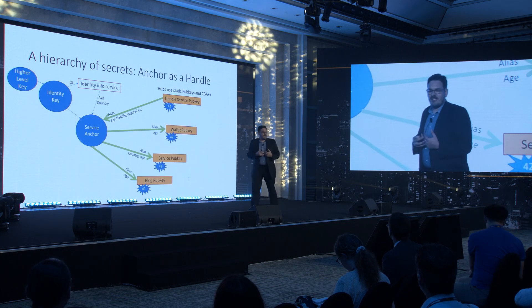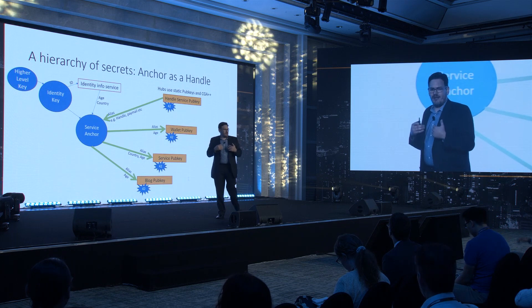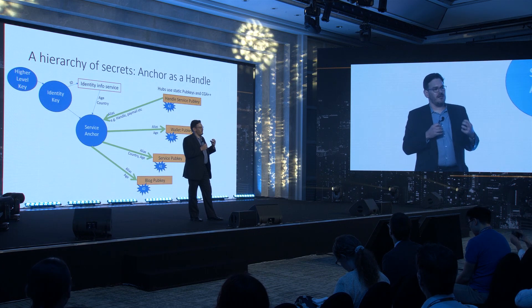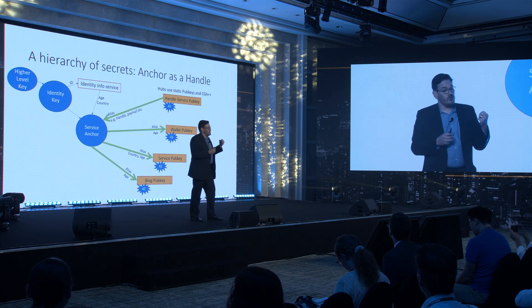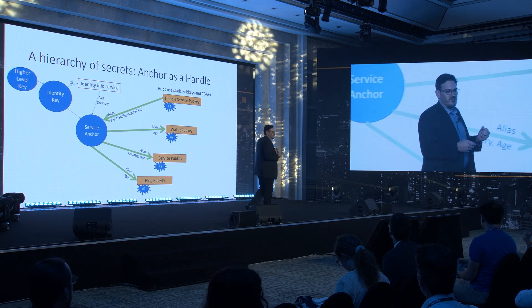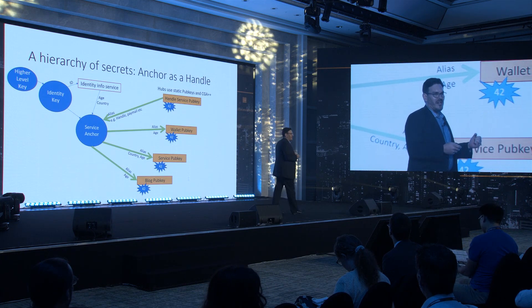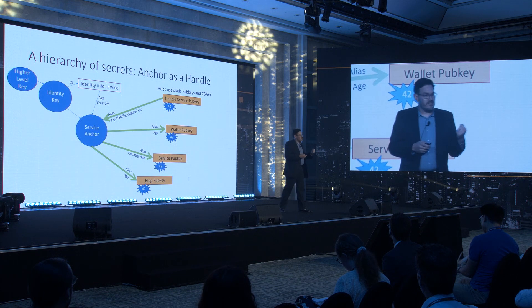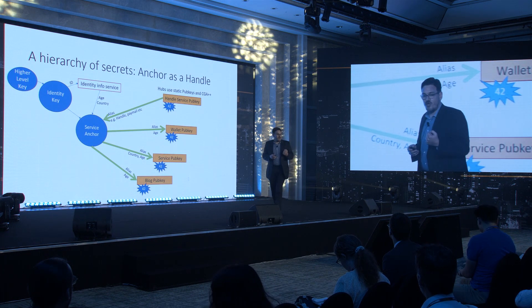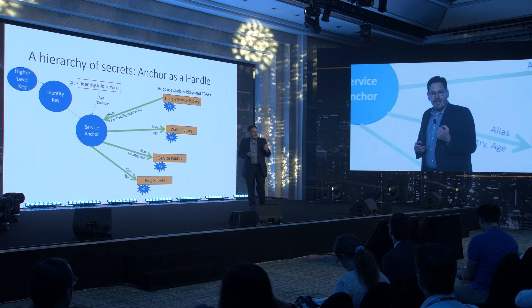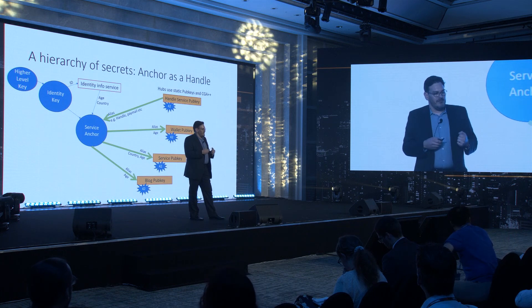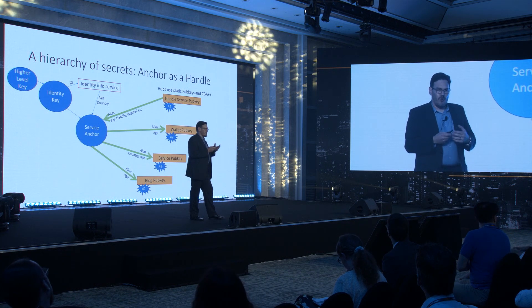Once a service anchor has been created between a user and a wallet or a handle service, it effectively becomes a static representation of that user's handle with its own key pair, which that user can then easily use to connect to any services that have integrated that particular handle service's payment technology. Each time the user reaches out to a new service from their anchor, a new shared keychain can be established between that service and the user. This maintains user privacy for almost any use case.